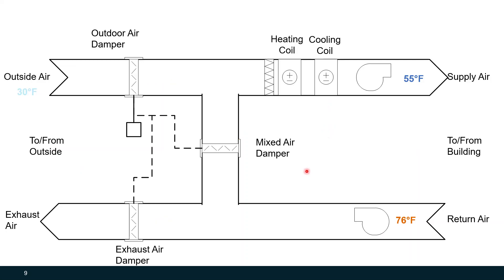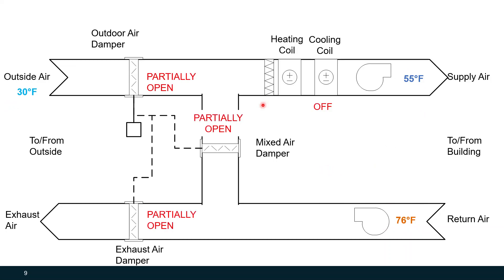Now let's say it's a slightly colder day — 30 degrees outside. We might want to use some return air because that's at 76 degrees, but because the building is still in cooling and maybe we have a lot of internal load, we still want to supply 55 degree air. We can actually mix the return air and outside air streams to get exactly 55 degrees, and our cooling coil can stay off — and so can our heating coil. So our dampers have modulated to achieve a mixed air temperature of 55 degrees.